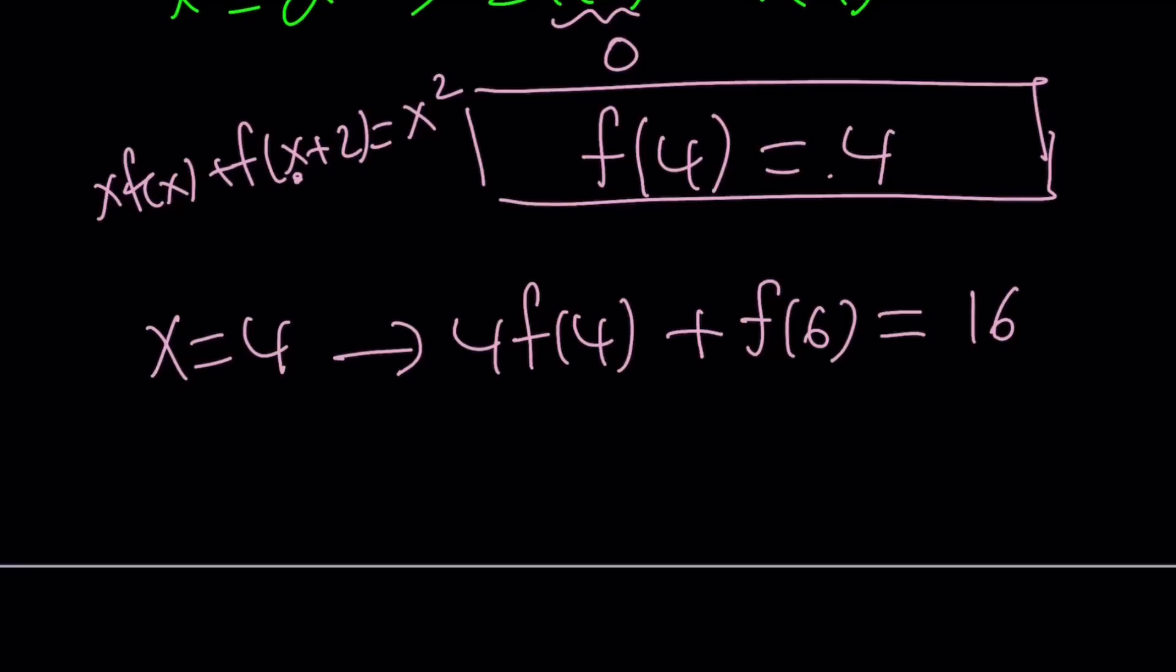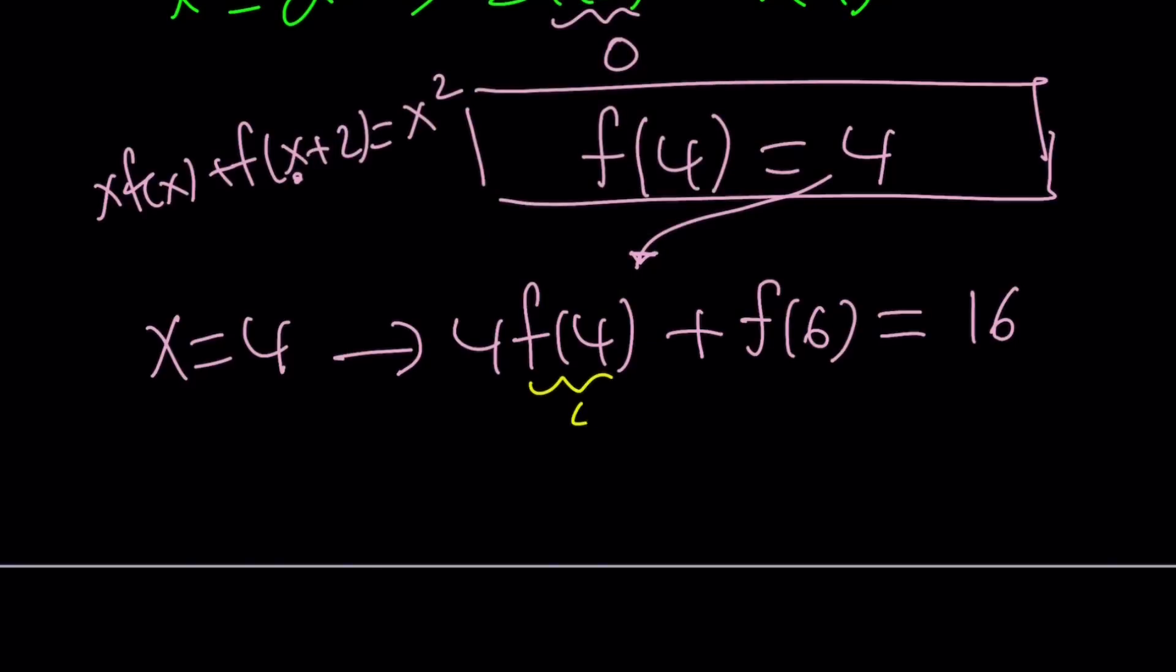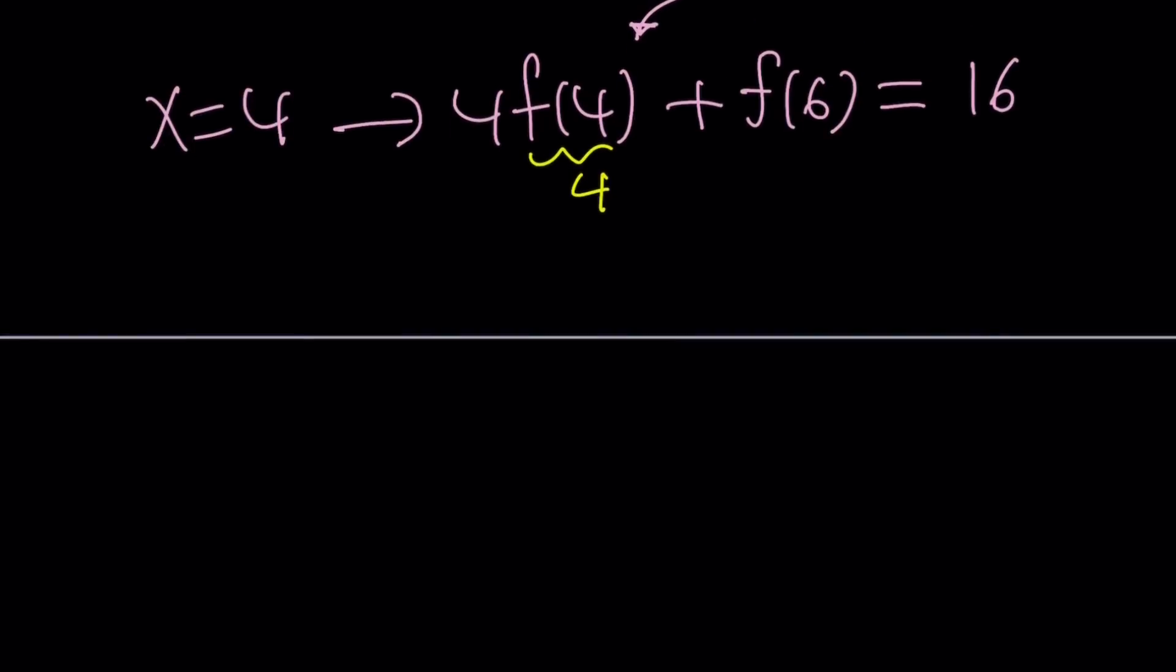Now f of 4, we know from the previous equation, f of 4 is equal to 4. So let's replace f of 4 with 4. And now you're going to get 16 plus f of 6 is equal to 16. Wow, that's interesting. We're getting 0 again. f of 6 is equal to 0, right?